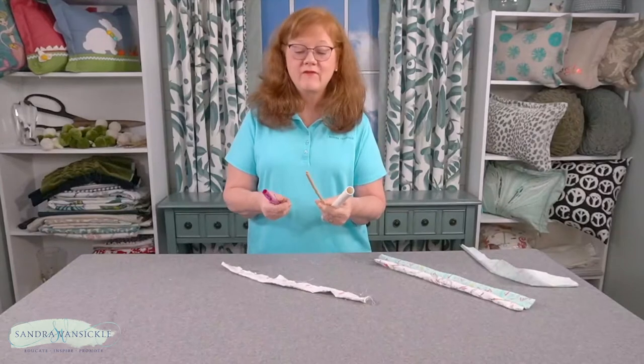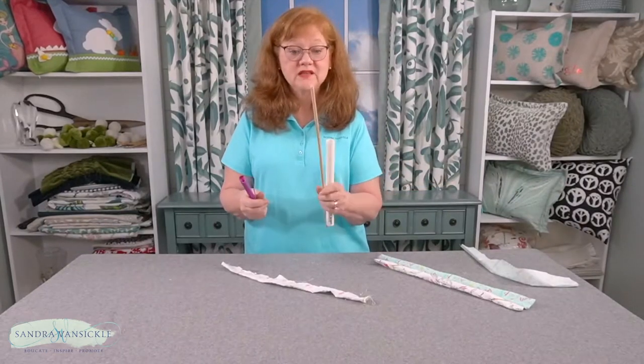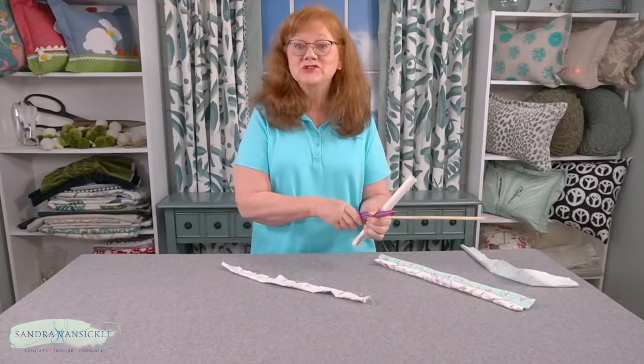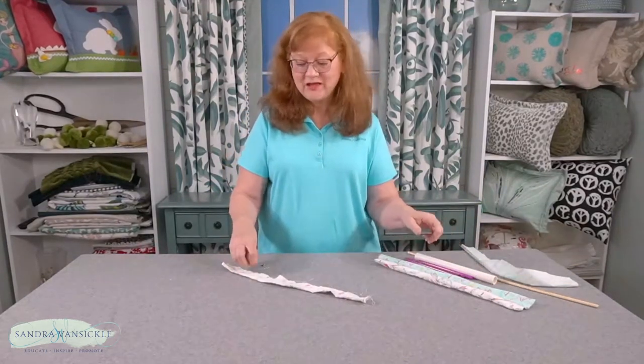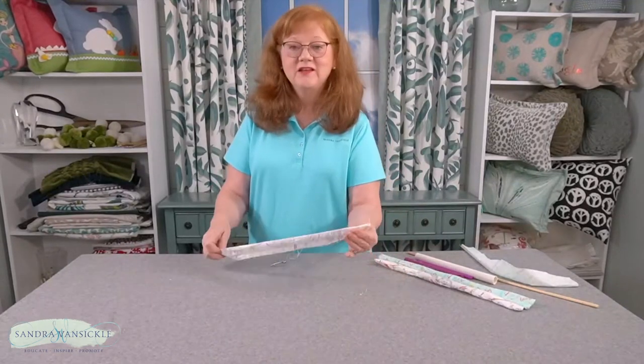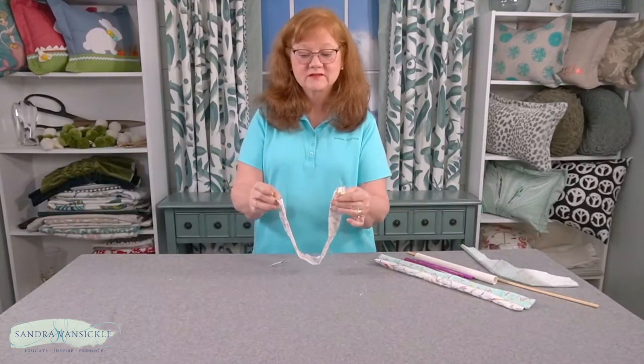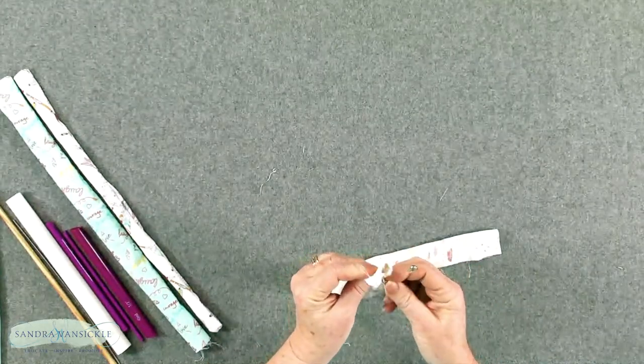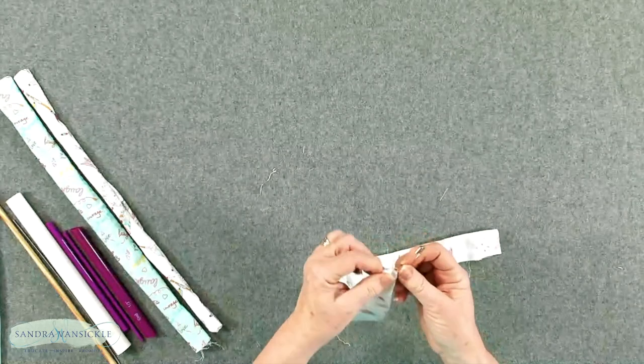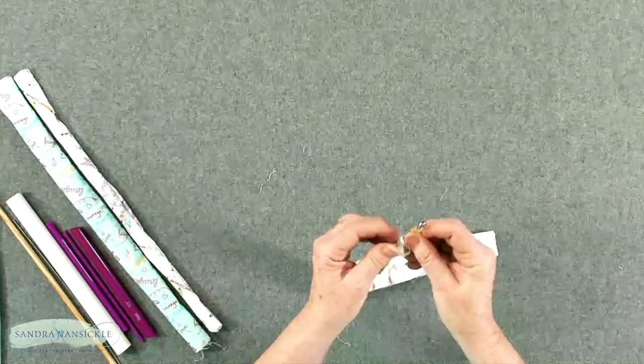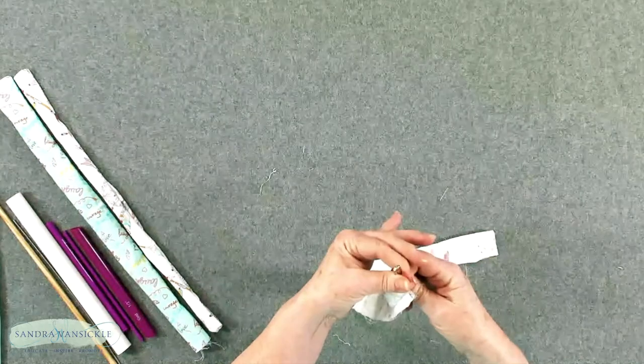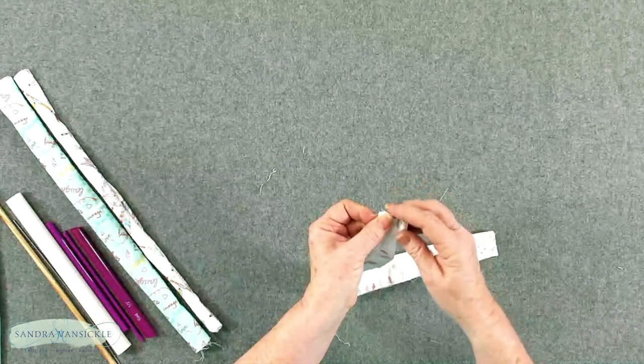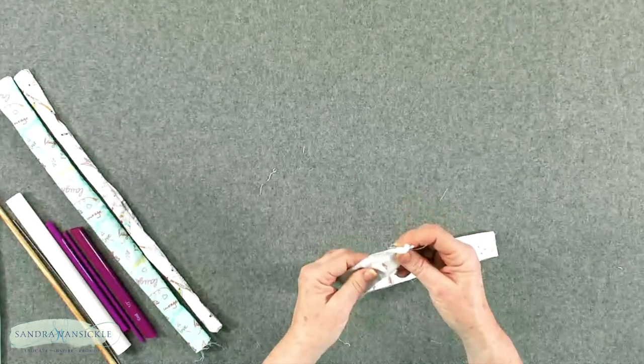Now you may not have the quick turn tool or the PVC and dowel tools at your disposal, so let me show you how you can use a good old-fashioned safety pin to turn a tie. Here I have a tie with two open ends. I'm going to take my safety pin and I'm going to put it right through one layer and out the top of the fabric. I'm going to close it up and then I'm just going to take the pin and almost do like a nose dive down into the center of the tube.